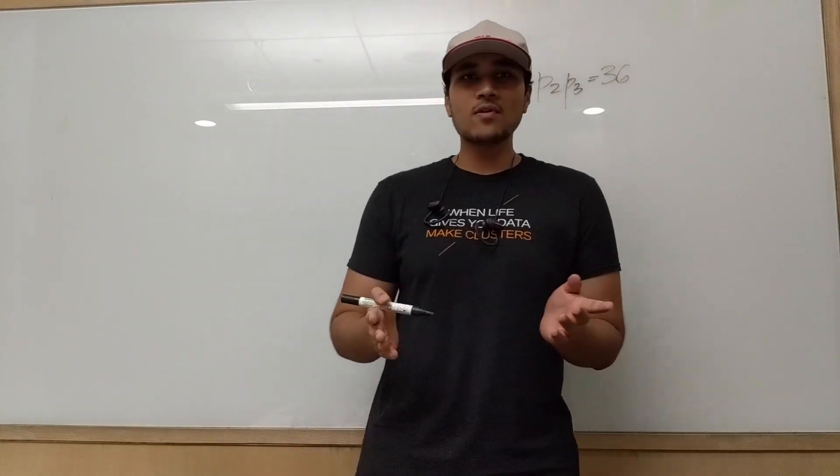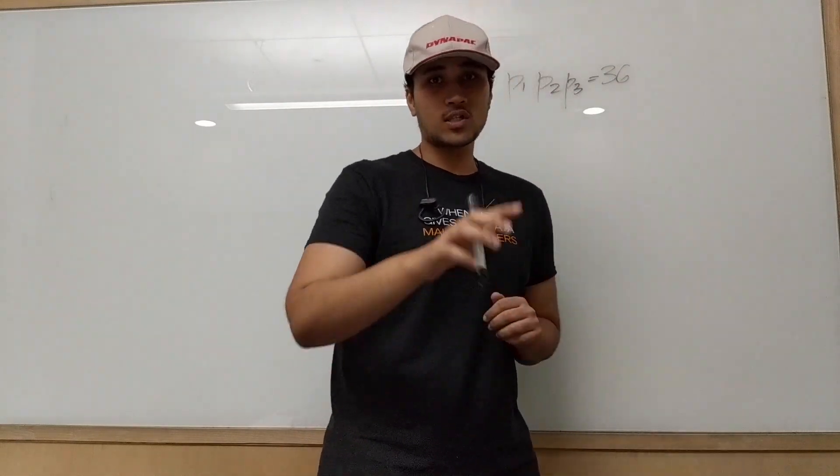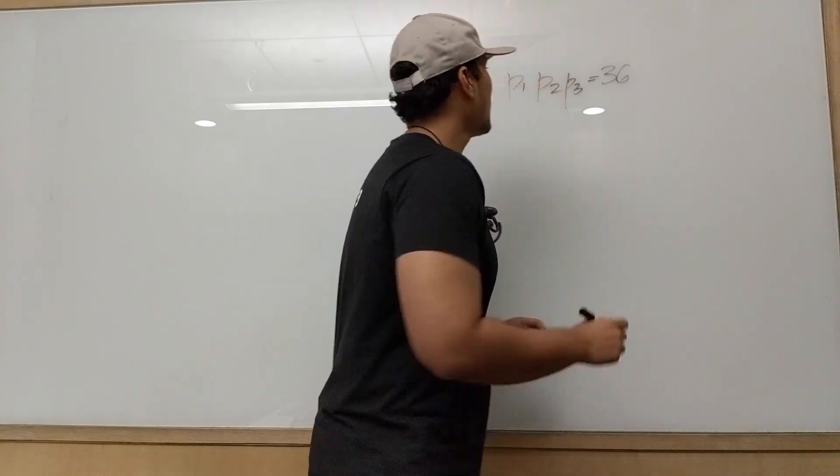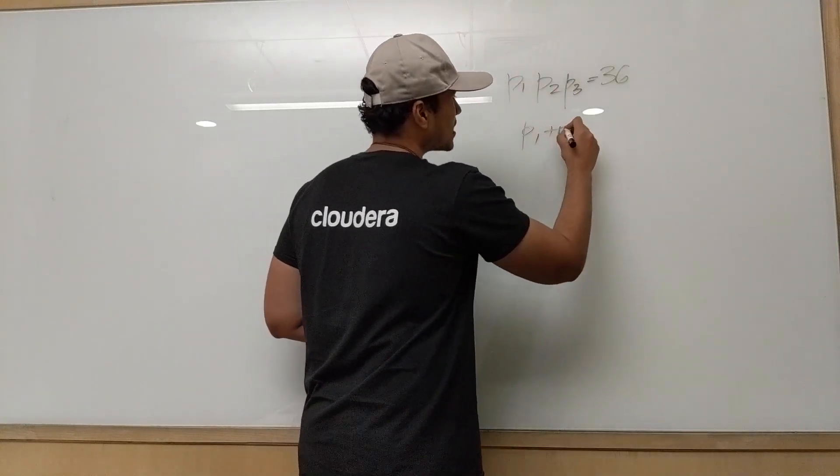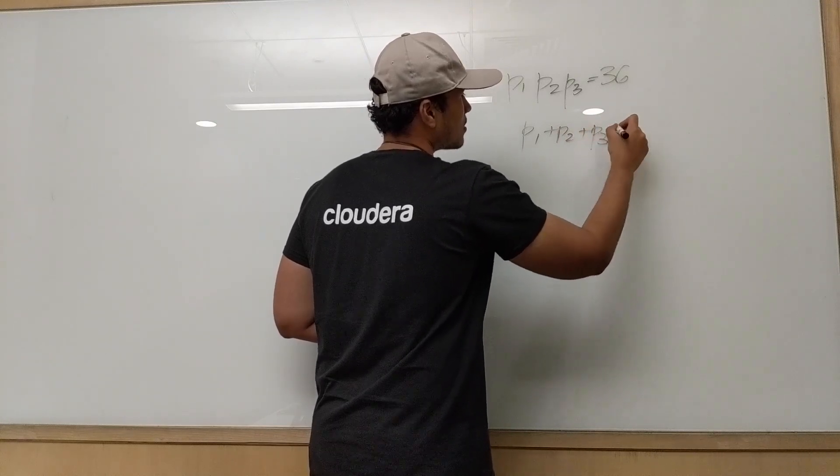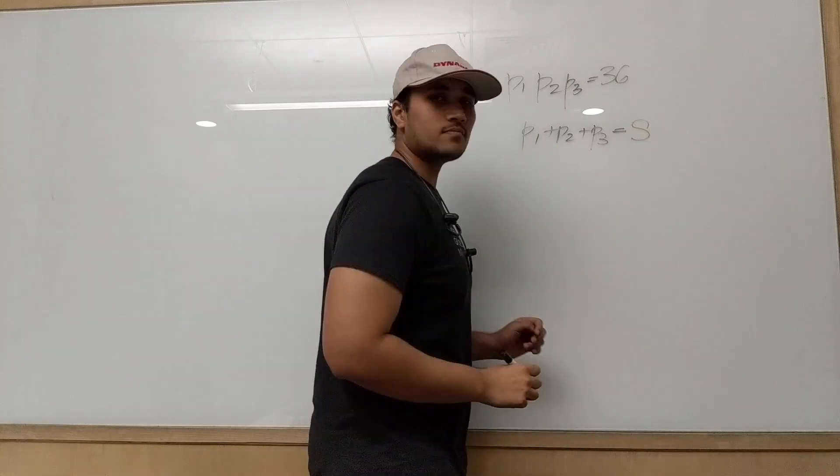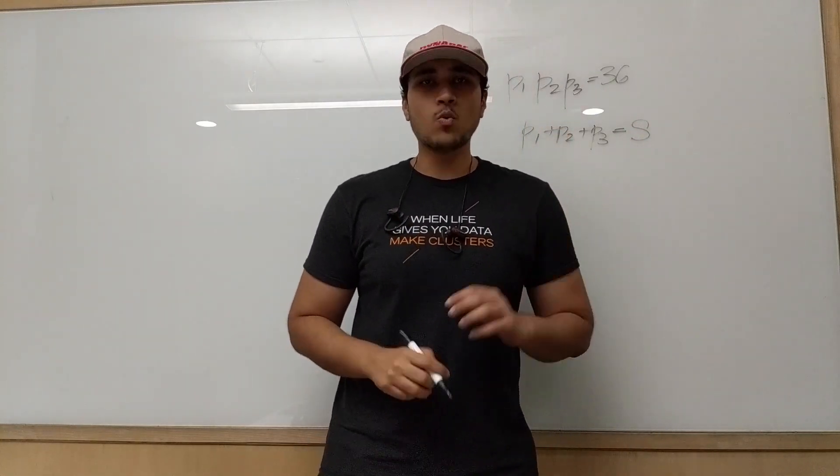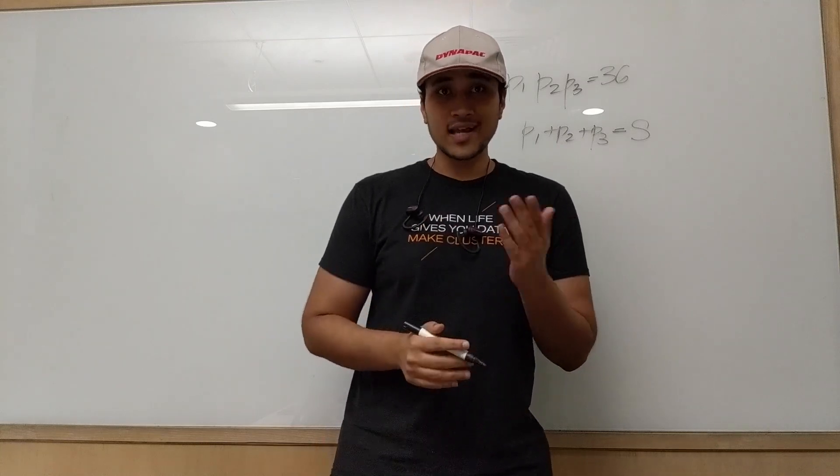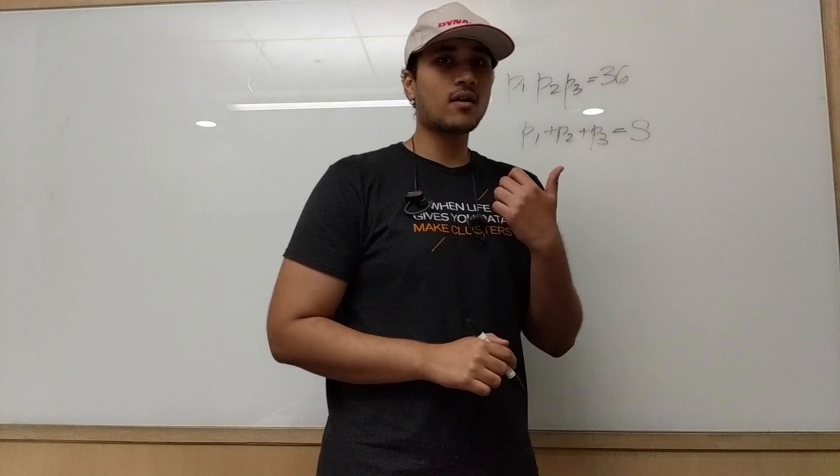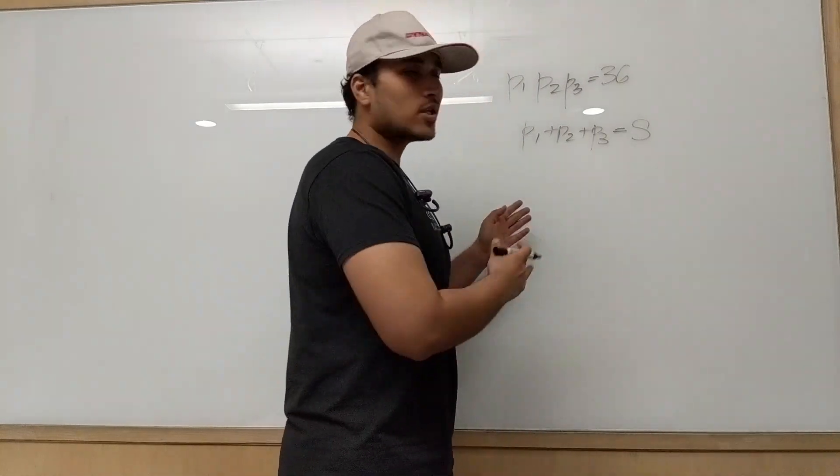Alright. Then he also told me the sum of their ages, which you guys don't know. But I knew because there was a placard lying over here. So P1 plus P2 plus P3 is something that I know. Let's call this S. Alright. But still this information was not enough for me to guess what the exact ages of his cousins were. But then he told me that his elder cousin likes to play football. So let's work this out.